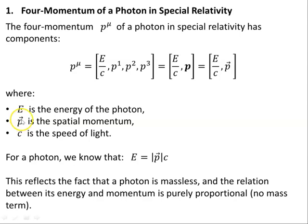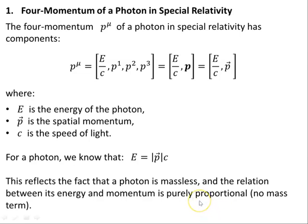For a photon, E equals the magnitude of the three-momentum times the speed of light. This reflects the fact that the photon is massless and the relation between energy and momentum is purely proportional — no mass term. Going back to the energy-momentum relation: E squared equals p squared c squared plus m squared times c to the power of four. If you set m to zero, the second term drops off, leaving E squared equals p squared c squared, so E equals pc.